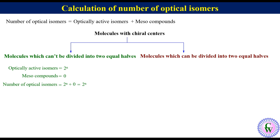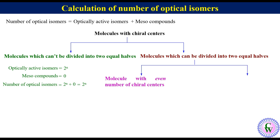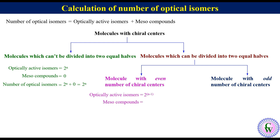Molecules which can be divided into two equal halves have further been categorized into molecules with an even number of chiral centers and molecules with an odd number of chiral centers. In the first case, the number of optically active isomers is equal to 2 raised to the power n minus 1.